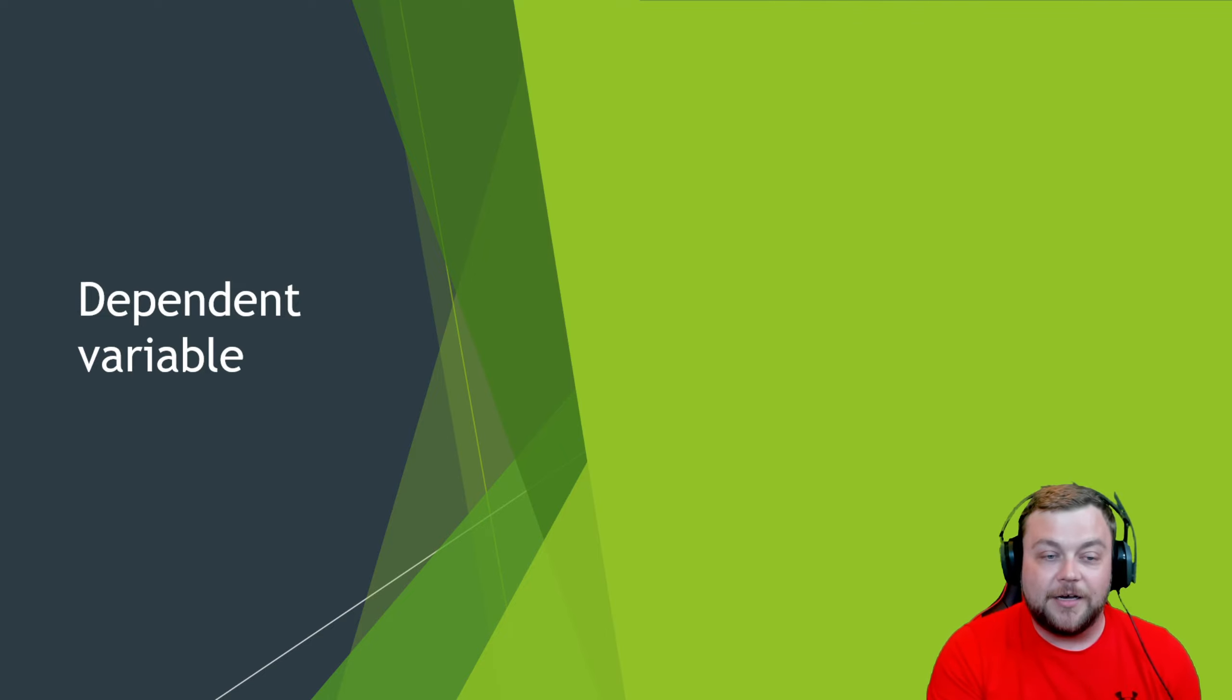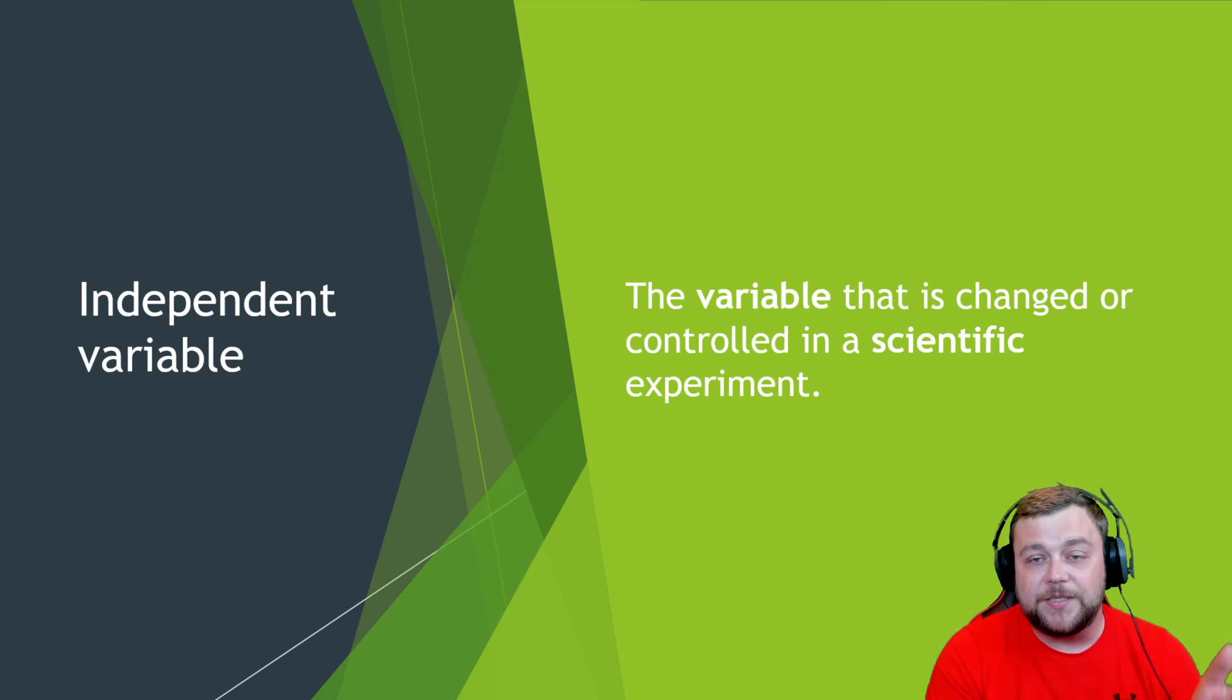On the GED test, you will be asked about the dependent variable and the independent variable. The variable being tested in the experiment, that's the dependent variable - the thing that is being tested. The independent variable is the variable that has changed or controlled in a scientific experiment. Earlier I mentioned, if I turn down the temperature in the room, then the students will score better.